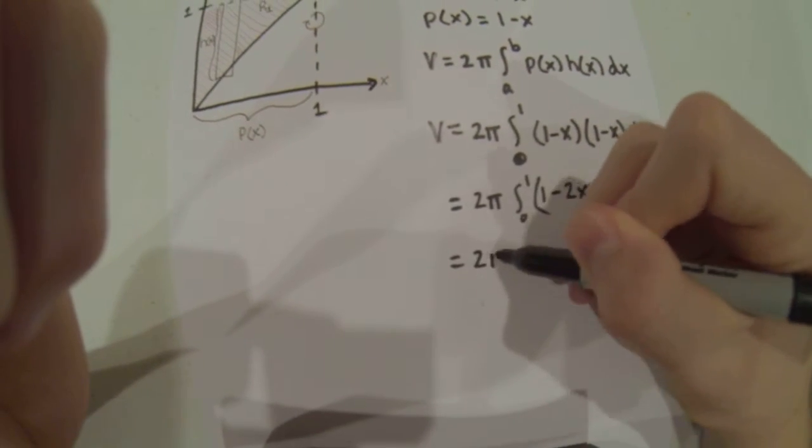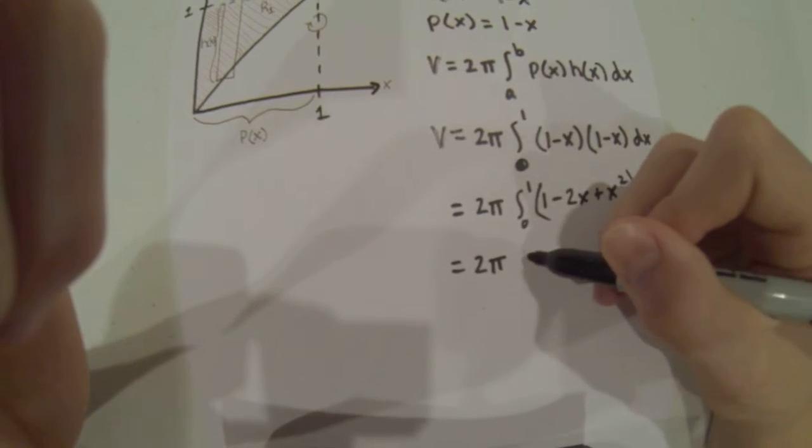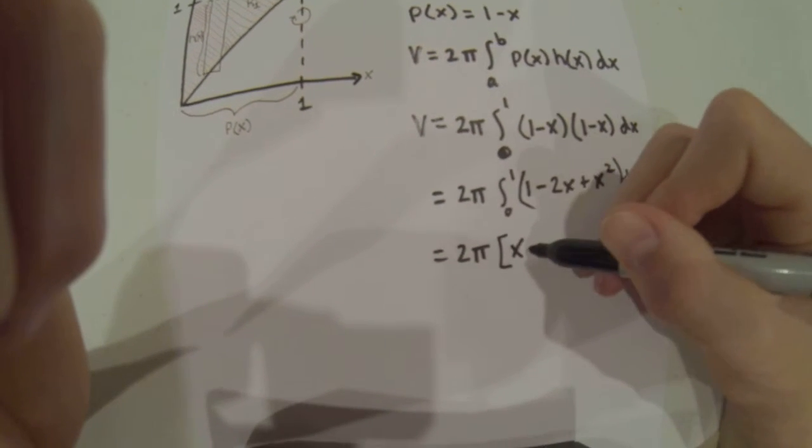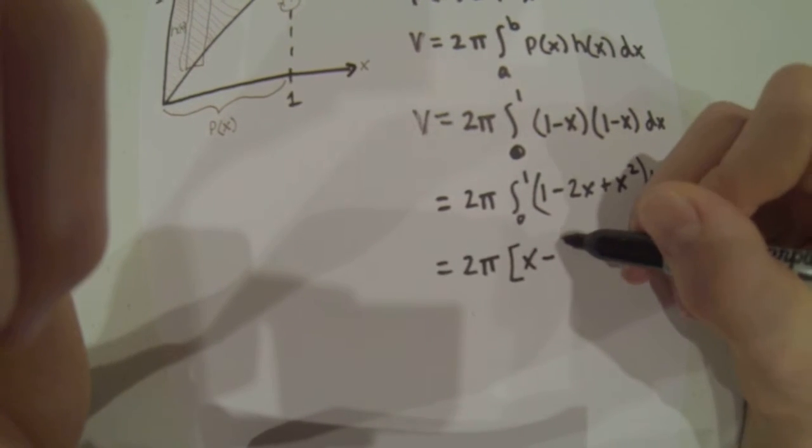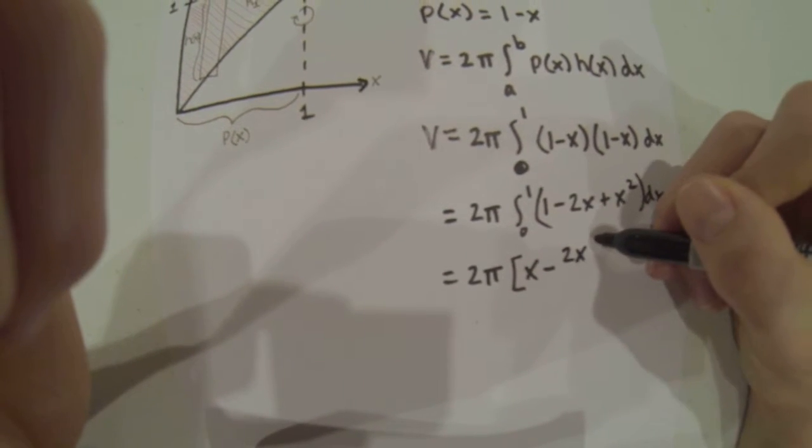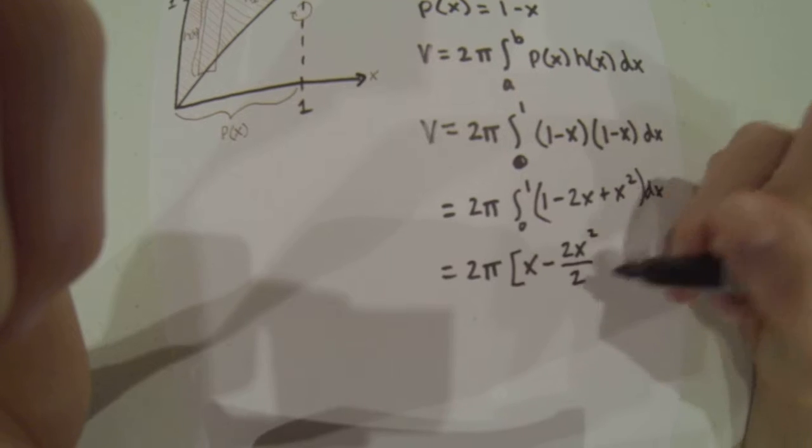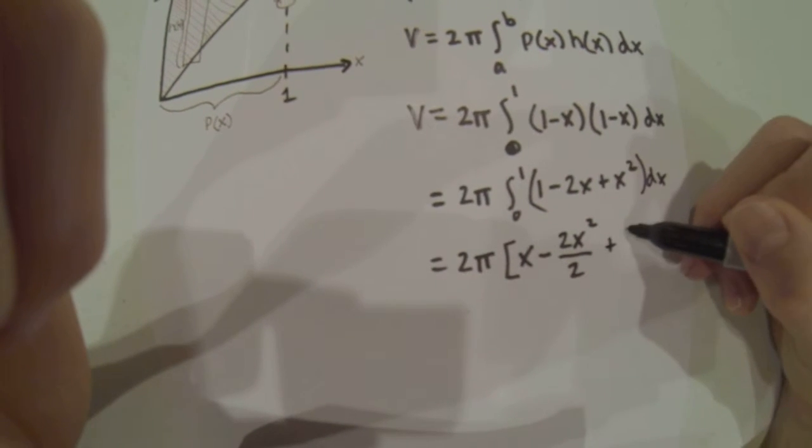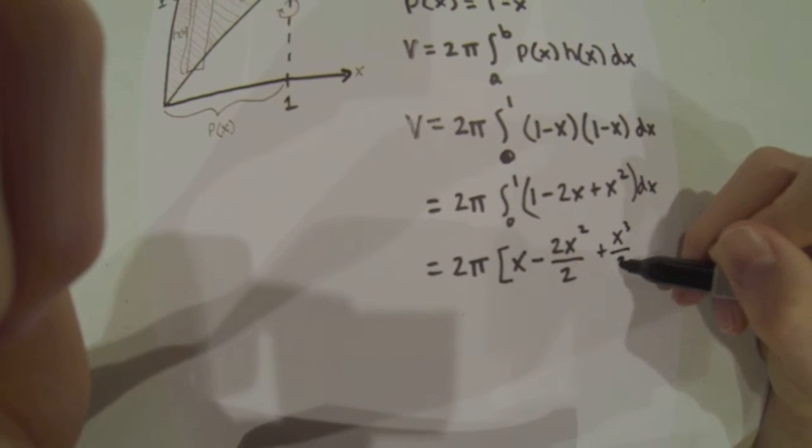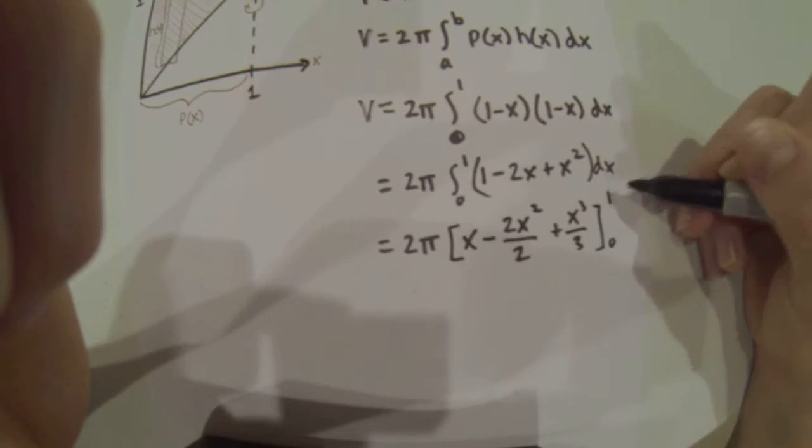So 2π times [x minus 2x squared over 2 plus x cubed over 3] from 0 to 1.